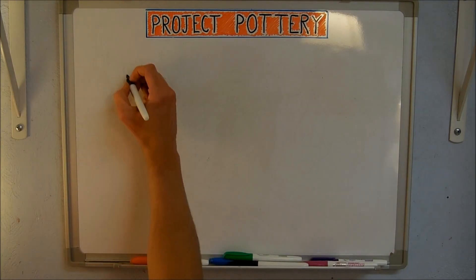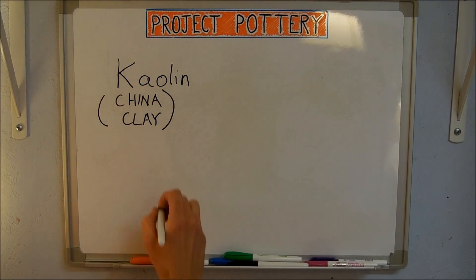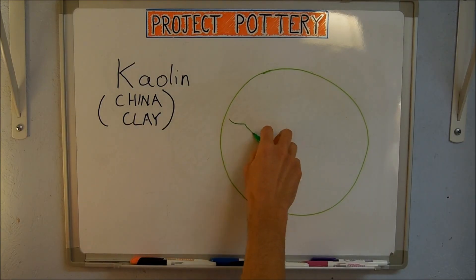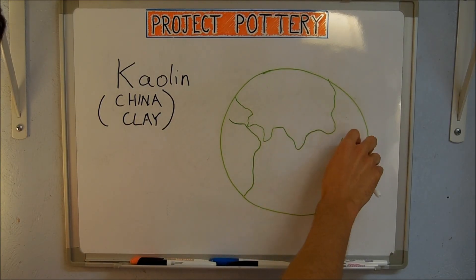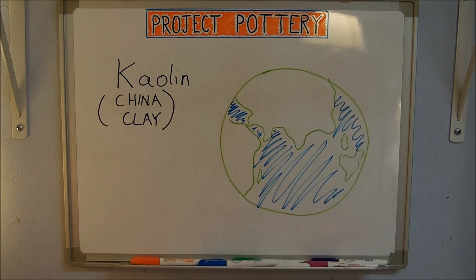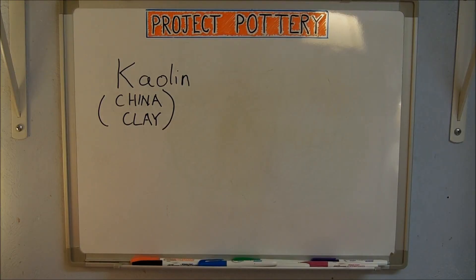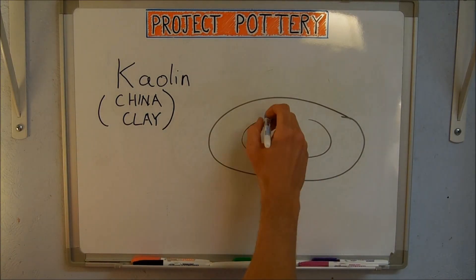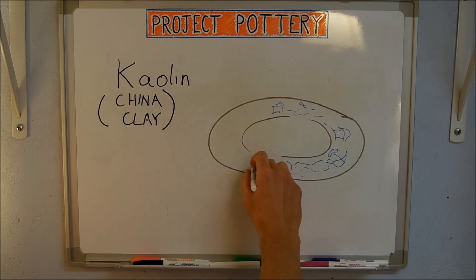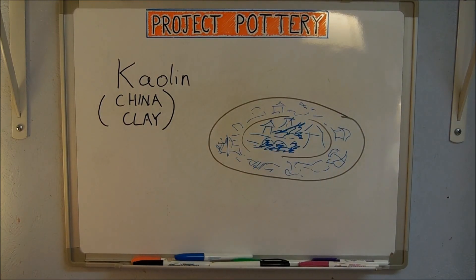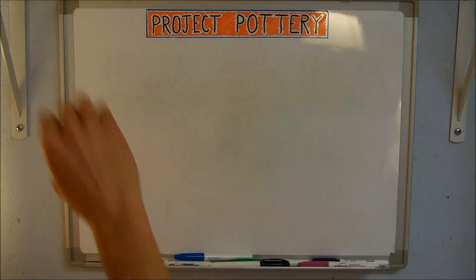Clay that is found at the same spot it was formed is called residual or primary kaolin. This tends to happen in warm, humid environments, mostly outside of the US. Kaolin is the purest clay. It looks the whitest, fires to the highest temperature, and is the least plastic, meaning least malleable. Kaolin is also known as china clay and is the core component of most porcelains.